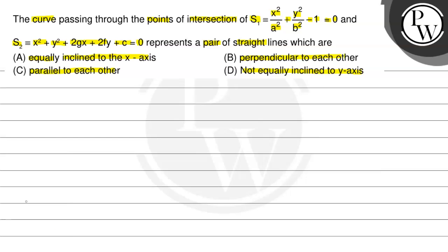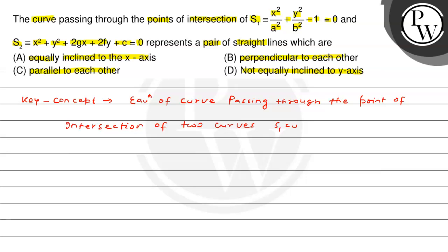Bachow, पहले इस question की concept देखते हैं। अगर दो curves के point of intersection से pass होने वाले curve का equation — an equation of curve passing through the point of intersection of two curves S1 = 0 and S2 = 0 is S1 + k·S2 = 0, where k is a parameter.